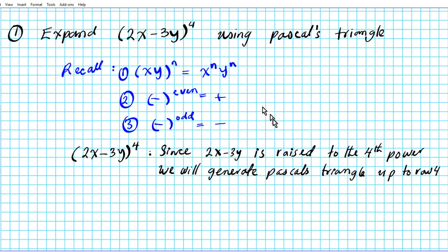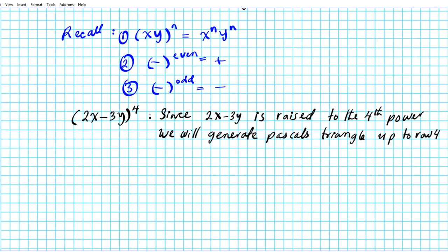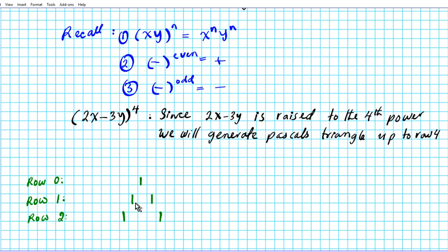Let's start with the generation of Pascal's triangle. Remember Pascal's triangle starts from row 0. For row 0, we have 1. For row 1, we have 1, 1. For row 2, you generate terms by placing 1 at the ends, and then add the 2 top numbers to generate the bottom middle number: 1, 2, 1.